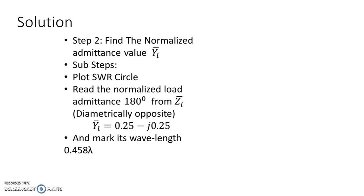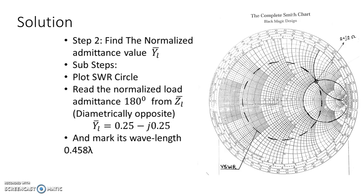The next step is to get the normalized admittance, since we are working with shunt stubs and therefore work in admittances. Using the Smith chart: first, plot a VSWR circle, shown here with the dotted lines. To plot it, take the radius from the center to point ZL, then draw a circle.